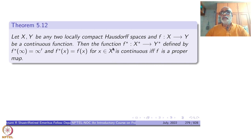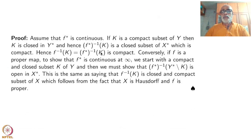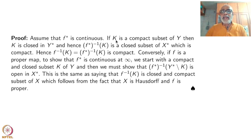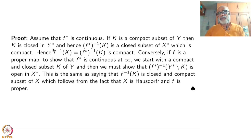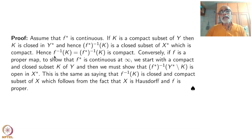There is no geometry here — purely by definitions of X-star and Y-star, this is not difficult. Assume that f-star is continuous. If K is a compact subset of Y, then K is closed inside Y-star, because it is a compact subset of a Hausdorff space. Then f-star-inverse of K is a closed subset of X-star, and a closed subset of X-star is compact.